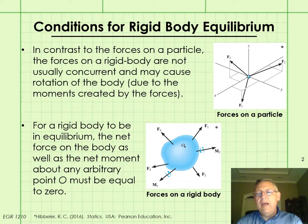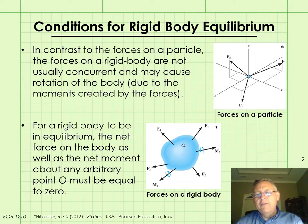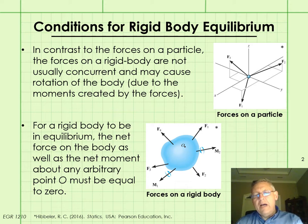We didn't have to worry about moments because we were dealing with concurrent force systems where the lines of action of all the forces acted through the particle. Now we're going to expand our equilibrium work to rigid bodies, where we not only have to worry about the forces acting on the body, but also the moments. For a rigid body to be in equilibrium, the sum of the forces and the sum of the moments acting on the body both have to be zero. By rigid body, we're assuming that the body does not deform when forces and moments are applied to it.